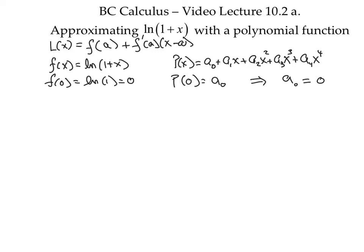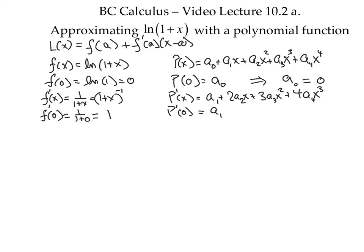Let's take the derivative of both sides. We want the first derivative at 0 to be the same for both f and p. Therefore, the conclusion that we reach is that a1 must be 1.